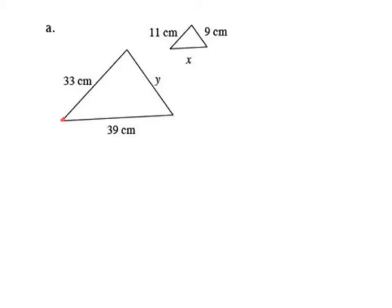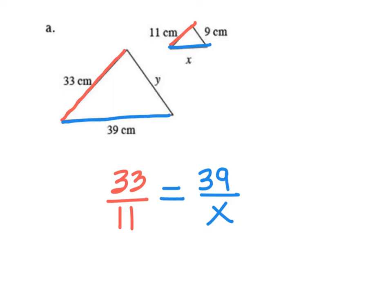So first thing I always do is take two sides that correspond. So 33 corresponds to 11 in the smaller figure. So I'll do 33 over 11. That's a ratio of those two sides. And then I'm going to go to this one. I'll do 39 corresponds to X. So 39 corresponds to X. And I know because these are similar figures, the ratio of their two side lengths should be equal. Okay, so I set that up.